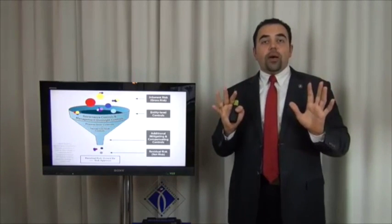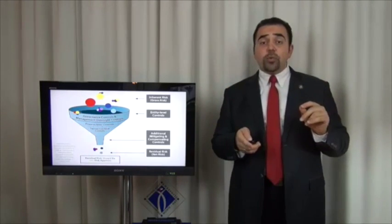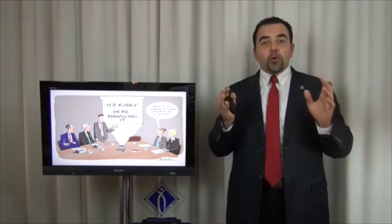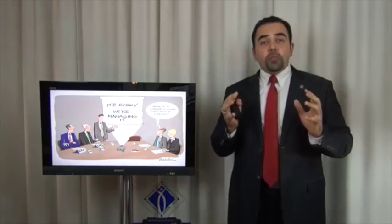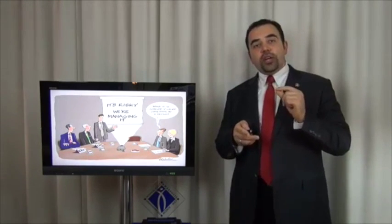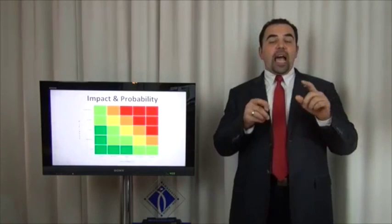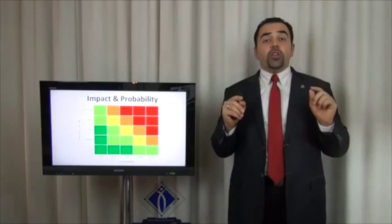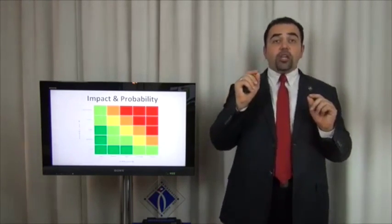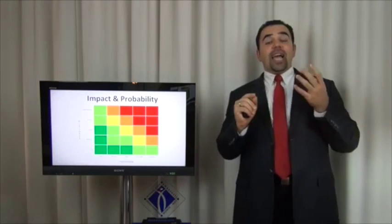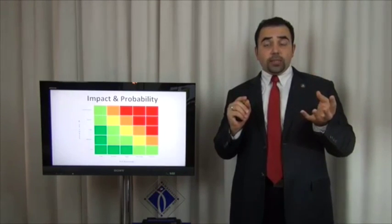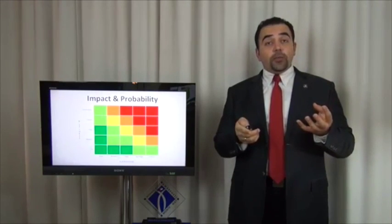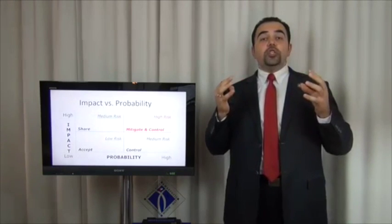Many organizations say they are managing risk, but if you don't report it, measure it, or assess it, how do you know you're actually managing it? The first step is creating a risk map — using impact and probability to assess whether each risk is high or low. After implementing controls and risk management processes, you evaluate whether the risk is still high or has become low, and then determine how to manage it.